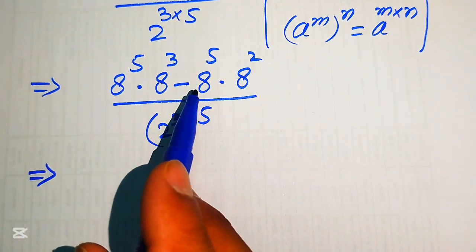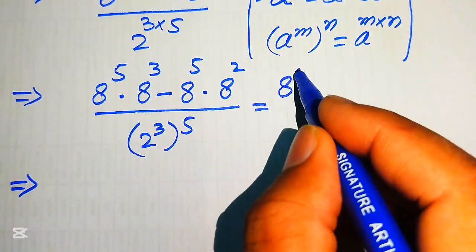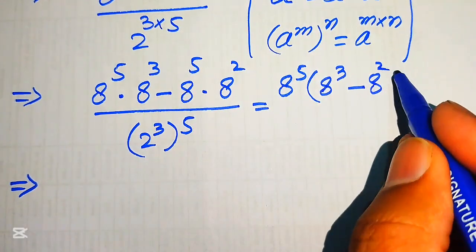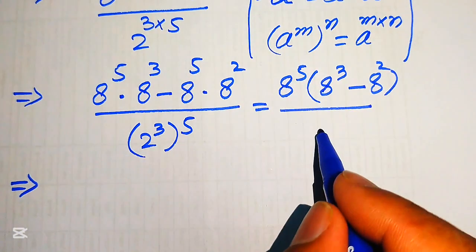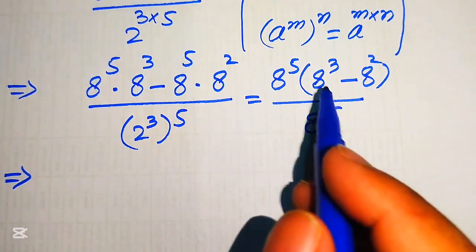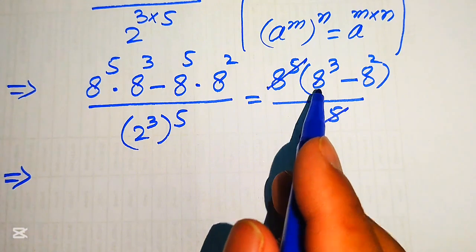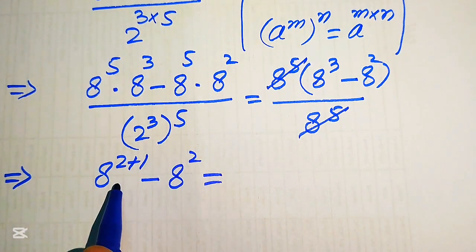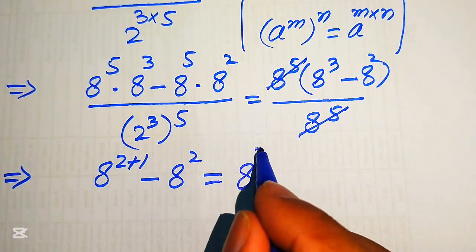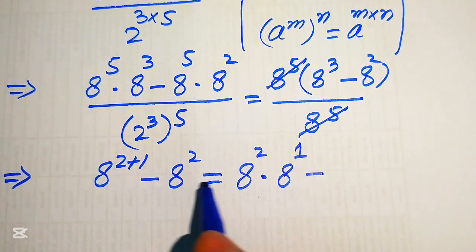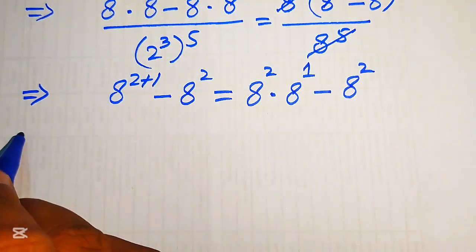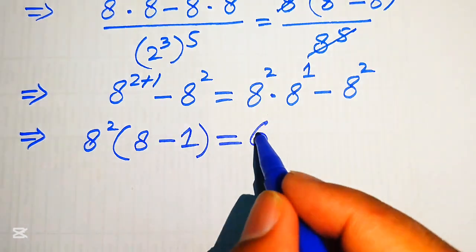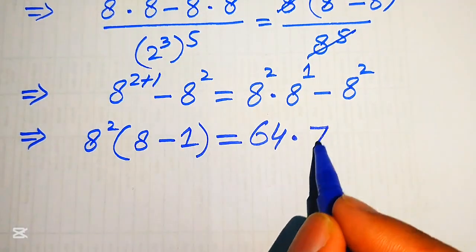We take out 8 to the power of 5 as a common factor in the numerator, leaving 8 cubed minus 8 squared in the bracket. In the denominator, since 2 cubed equals 8, it becomes 8 to the power of 5. The 8 to the power of 5 cancels out, leaving 8 cubed minus 8 squared. We rewrite 8 cubed as 8 squared times 8 to the power of 1, minus 8 squared. Taking 8 squared as common gives us 8 squared times (8 minus 1), which is 64 times 7.